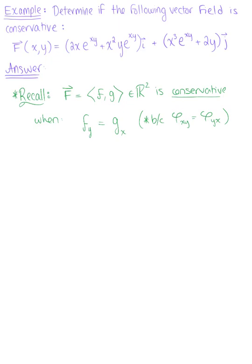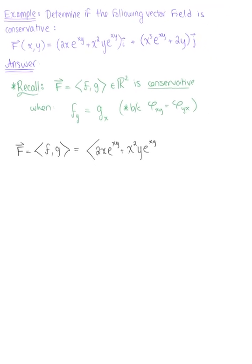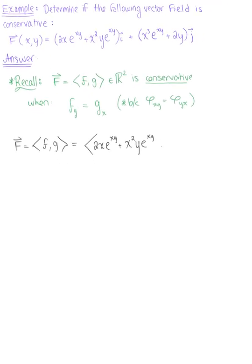So we need to find our partial derivatives. I'm going to rewrite my given vector field in its component form so we can see what f and g are. So f here is 2x times the natural exponential raised to the xy, plus x squared y times the natural exponential raised to the xy. And our g component is x cubed times the natural exponential raised to the xy, plus 2y.